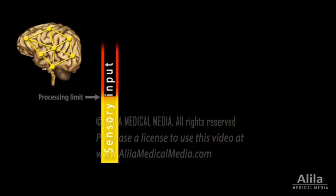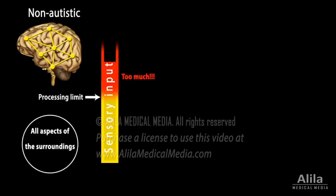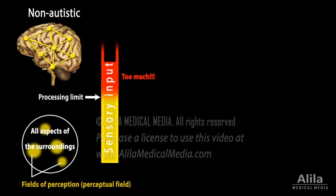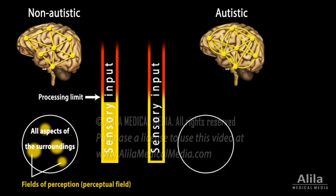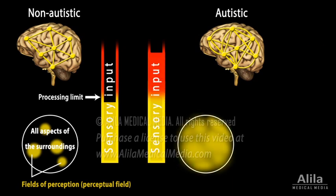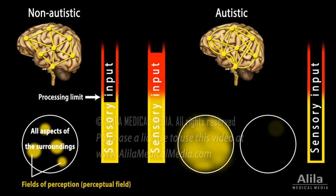Our brain has a certain limit on the amount of information it can process at one time. A typical brain selectively focuses on some aspects of the surroundings and ignores others, keeping sensory input at a manageable level. An autistic brain, on the other hand, seems to absorb all information more or less equally, or in some cases, fixates on a different object or subject. As a result, autistic people may notice details that others do not, but have difficulty following the topic of a conversation or seeing other people's point of view.